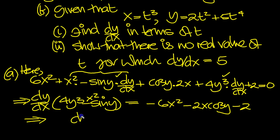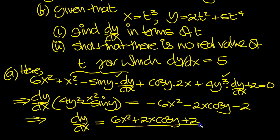So what have we got there for dy/dx? dy/dx is equal to, I'm going to run a plus through all of this, so it's 6x squared plus 2x cos y plus 2 over this stuff here, but because I've run a minus through here, I need to run a minus through this bracket.